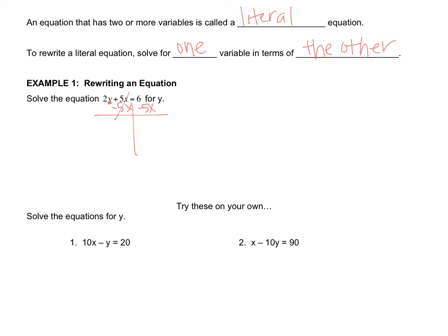Now that cancels out, and you bring down 2y equals. Now this is a number, and this is a variable, and you can't combine a number with a variable. They're not like terms. So since they're not like terms, the only thing that you can write is 6 minus 5x. Now the next step to get the y by itself is to get rid of the 2. So what operation do you have? Multiplication. What's the inverse? Division. So we're going to divide both sides by 2.